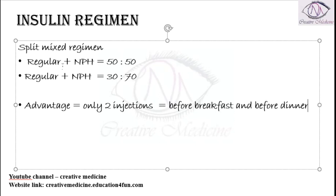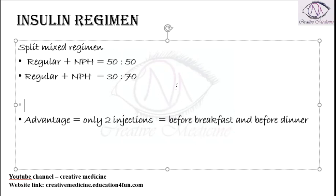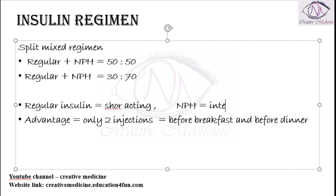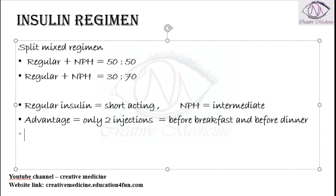Regular insulin is a short-acting insulin, whereas NPH is an intermediate-acting insulin. When the patient takes two injections before breakfast, regular insulin is released first, which decreases post-prandial hyperglycemia. The maintenance of glucose levels throughout the day is then managed by the intermediate-acting NPH insulin.